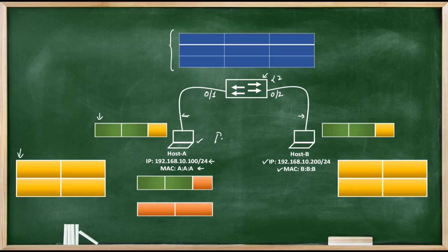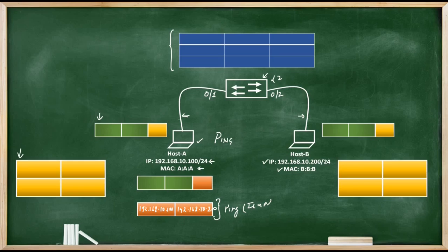We are going to use the ping utility to test connectivity between these two hosts. If you run ping 192.168.10.200 on Host A, it will create an ICMP echo packet with source address 192.168.10.100 and destination address 192.168.10.200, and send it towards Host B. Host A then starts listening for an ICMP echo reply from Host B. If it gets the reply, it knows there is no issue in the network and Host B is reachable. But what exactly happens behind the scenes when Host A sends the ping packet towards Host B?